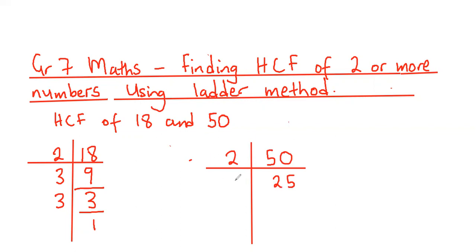3 cannot divide without leaving a remainder, but 5 is divisible. 5 into 25 is 5. And 5 into 5 is 1. When we get 1, we stop.